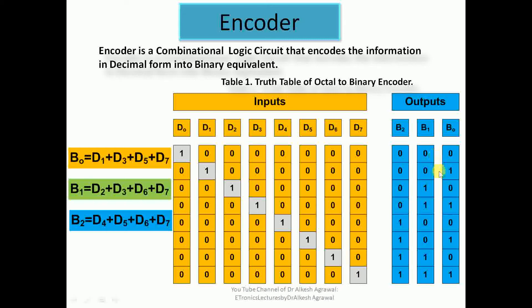Similarly, b1 has high output values for d2, d3, d6, and d7. So: b1 = d2 OR d3 OR d6 OR d7. And b2 has high values for d4, d5, d6, and d7. So: b2 = d4 OR d5 OR d6 OR d7.